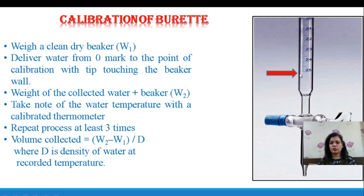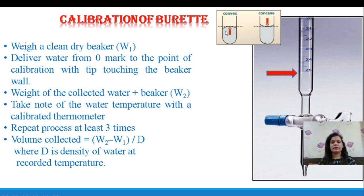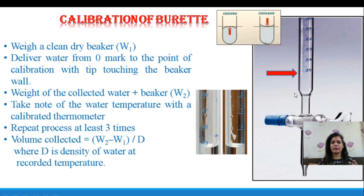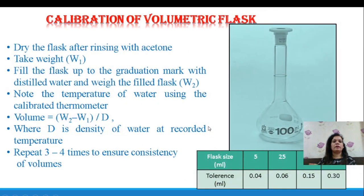Take precaution not to deliver volume below the 25 ml mark. Watch the meniscus — concave for colorless solution, convex upper meniscus for colored solution. If a burette marked for 25 ml gives a reading of 24.9 ml from calibration, that is a systematic error. When calibrating multiple burettes in a lab, matching burettes with the same error minimizes calculation errors. Most experiments require double burette titration, so matching burettes of the same error will definitely minimize error.